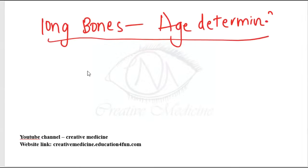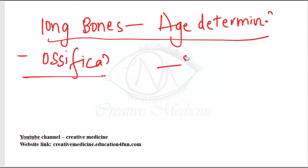Age from the long bones is by appearance and fusion of ossification centers at joints, where it is seen by radiographs. Fusion, appearance, and fusion of ossification at joints is important for long bones. We will see each joint in detail.